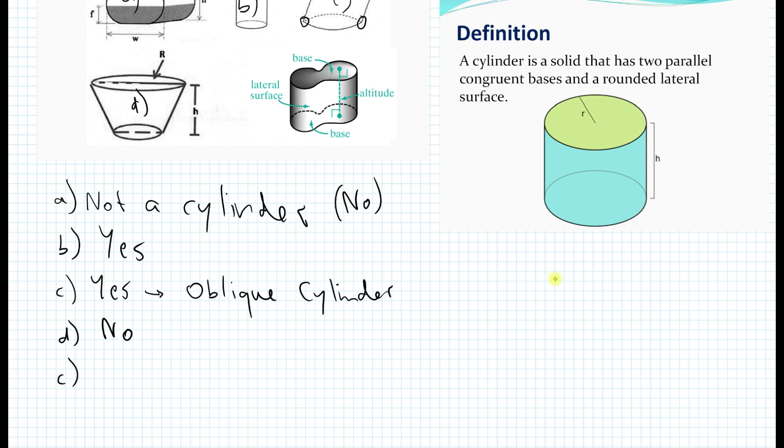Now what about E? That seems strange because we have never seen bases like this before for cylinders, right? Well, as a matter of fact, the answer is yes, it is a cylinder. If you look at the definition, it satisfies all the criteria. The bases are parallel, congruent, and the lateral surfaces are rounded as well.